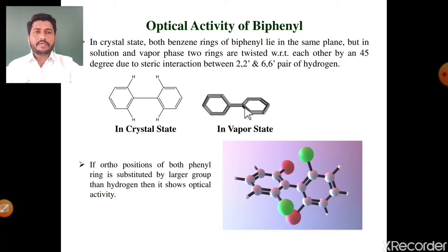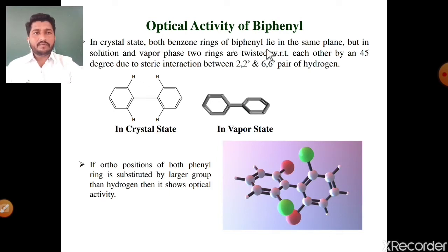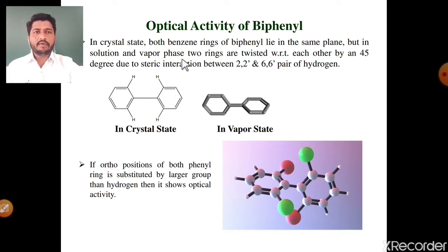The next topic is the optical activity of biphenyl molecules. What is meant by optical activity? Plane polarized light rotated either in the clockwise direction or anti-clockwise direction is called optical activity. How does the biphenyl molecule show optical activity? In the crystal state, both benzene rings of biphenyl lie in the same plane, but in solution and vapor phase, the two rings are twisted with respect to each other by 45 degrees. This is due to the steric interaction of the four ortho-positioned hydrogens — at the 2, 2', 6, and 6' positions.